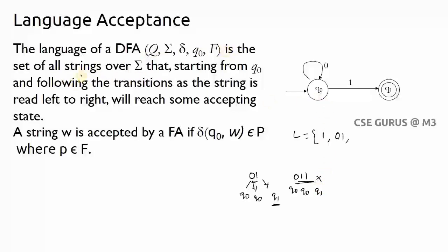The language of a DFA is the set of all strings over sigma, starting from q0 and following transitions, reading the string from left to right, that finally reach some accepting state. For example, '001': q0 on 0 goes to q0, again q0 on 0 goes to q0, then q0 on 1 goes to q1 — final state, accepted. Like this, we can identify all strings in the language.